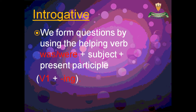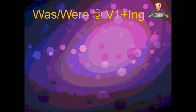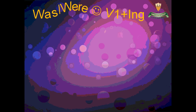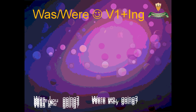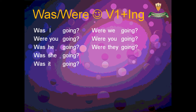Regarding questions, we form questions by using the helping verb was or were, plus the subject, plus the present participle — verb plus -ing. Was I going? Were you going? Was he going? Was she going? Was it going? Were we going? Were they going?